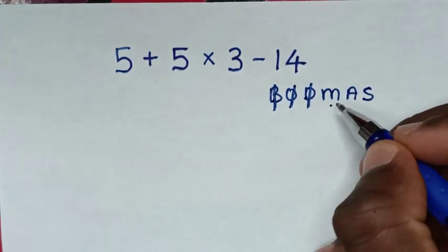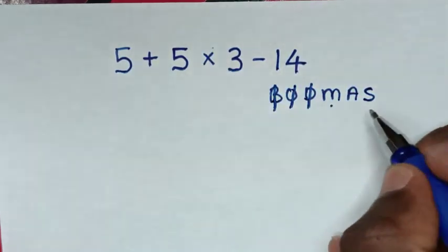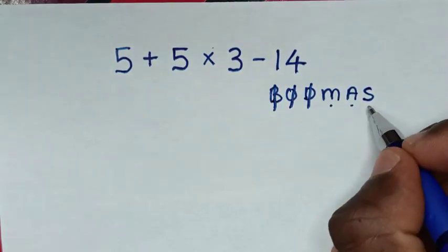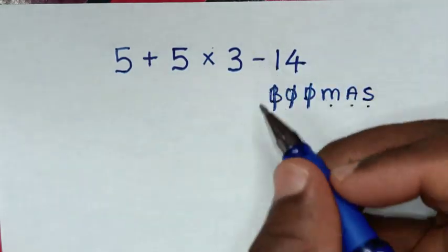M is multiplication - we have multiplication here. A is addition - we have addition here. S is subtraction - we have subtraction.